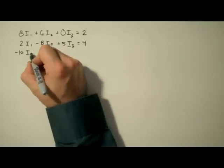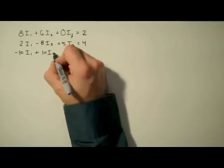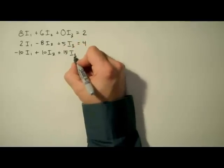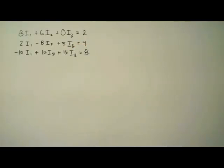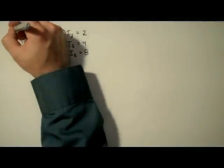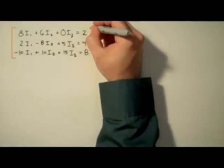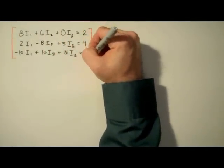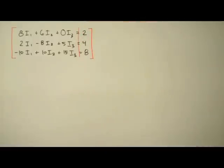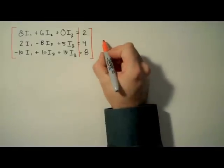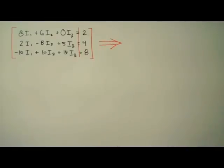So the first thing we want to do when applying the matrix method is make sure that the variables are in the same order for each equation, and if any variables are missing, use a zero for its coefficient, like we've done here for I3. Good, next we want to superimpose the augmented matrix right on top of our equations. This makes identifying coefficients as easy as 3.141592697.